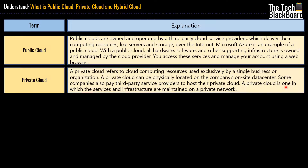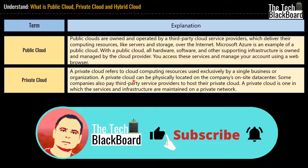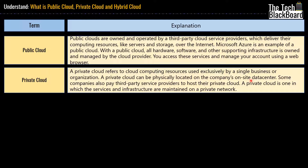Moving on, we have private cloud. In private cloud, the computing resources are exclusively used by one business or organization. Private cloud can physically be located at your own company's on-site data center, or it can be hosted by a third-party cloud provider. Importantly, in private cloud, services and infrastructure are always maintained on a private network, and all underlying hardware and software are exclusive to one organization.